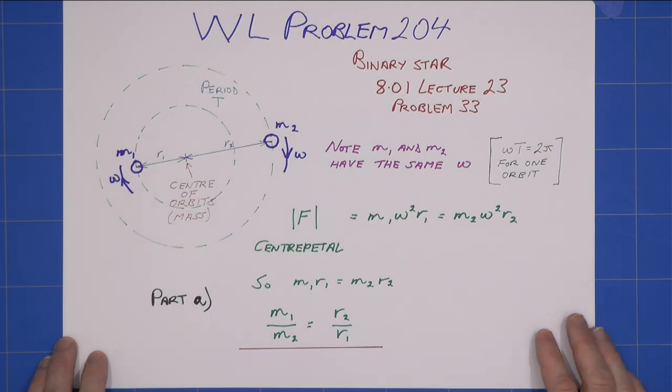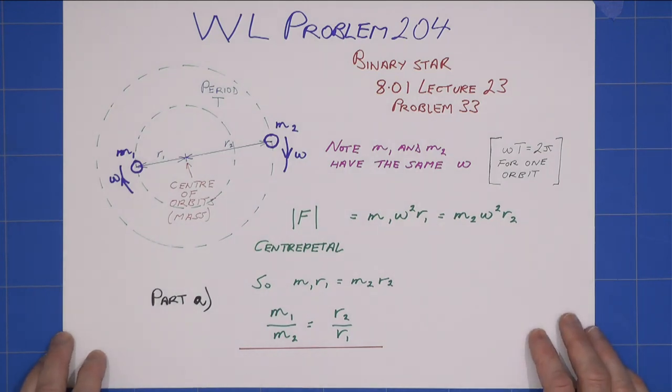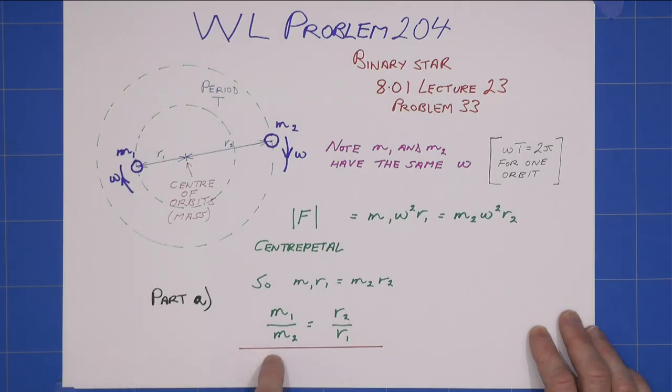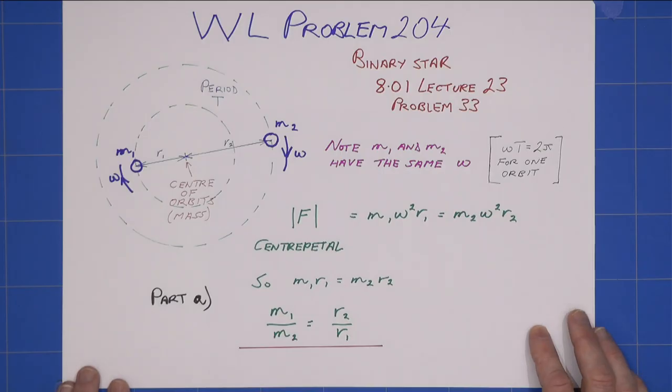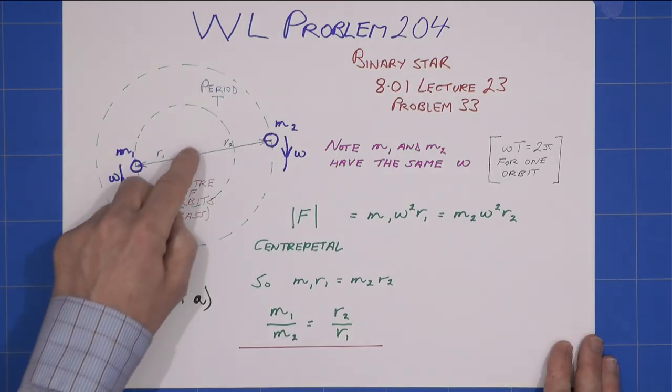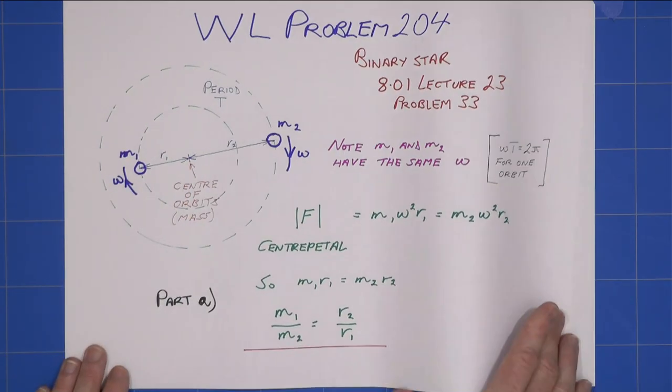I get this equation equals that equation, just considering the required centripetal force. Therefore, for Part A, the ratio of the masses m1/m2 is simply the inverse of the ratio of the radii r1/r2.